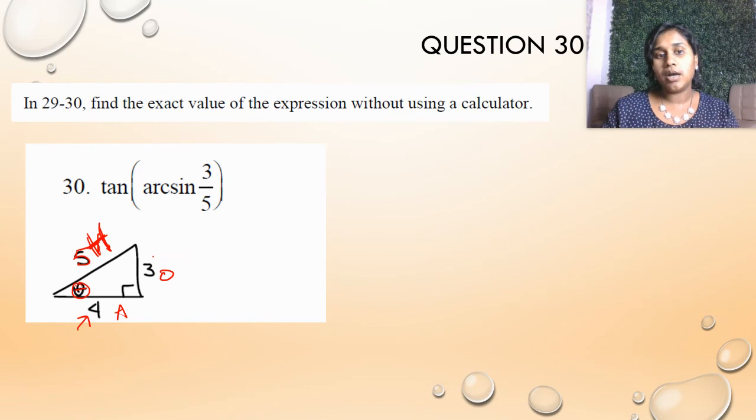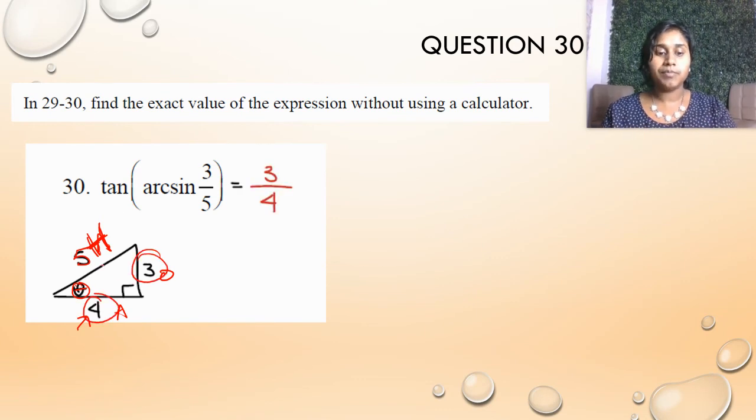And so that becomes SOHCAHTOA 3 over 5 right here. So 3 over 5, we solve for 4. And now we can set up our TOA, our tangent of that angle would be 3 over 4. So there's my answer. Whether you plug it into a calculator or you go ahead and solve it without that calculator, great job.